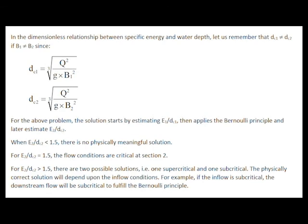When it is greater than 1.5, there are two possible solutions, one supercritical and one subcritical. And the physically correct solution depends upon the inflow condition. For example, if the inflow is subcritical, the downstream flow will be subcritical to fulfill the Bernoulli principle. On the following sketch, illustrate one possible solution.